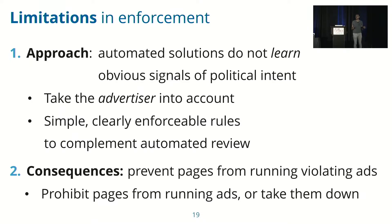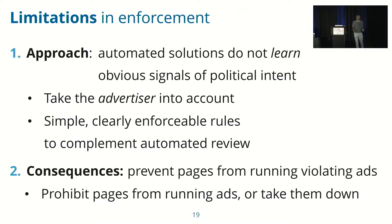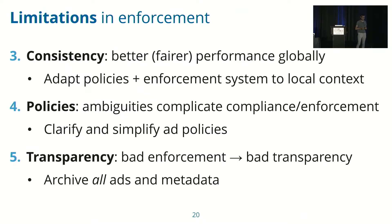Secondly, there seems to be a lack of consequences. Facebook states that they might prohibit pages who run violating ads from running ads in future, or even take down the pages altogether, but we did not see any evidence of this. We even saw over 70,000 political ads that still ran even though political ads were banned in the U.S. during or after the 2020 elections. Third, there is a lack of consistency — performance differs globally. While in the U.S. maybe only 1% of ads are missed, in Malaysia it was 45%. Facebook should adapt their policies and systems to local contexts, ensuring models understand local languages and that local issues are incorporated.